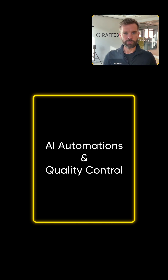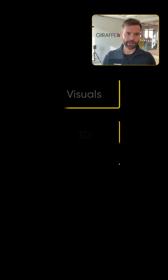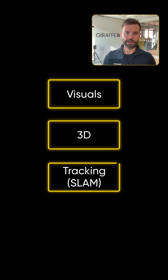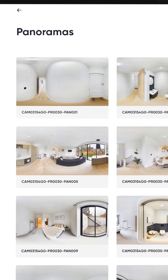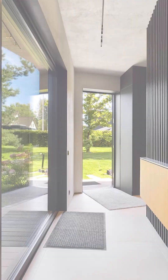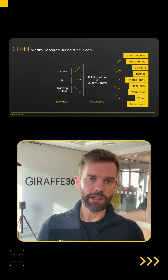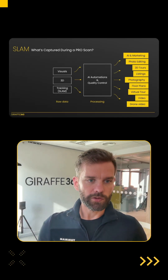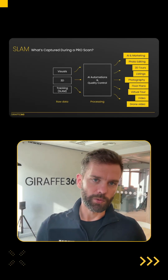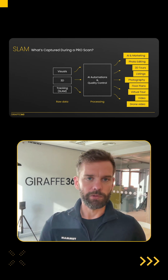For automations to work, we see there are three categories that, in terms of data, need to be plugged in. The data needs to be quite solid: it's visuals — panoramas and stills. Obviously, it's 3D data, in our case in terms of point clouds. But there's also tracking, and this is what we call SLAM, even though it's a bit more complicated.